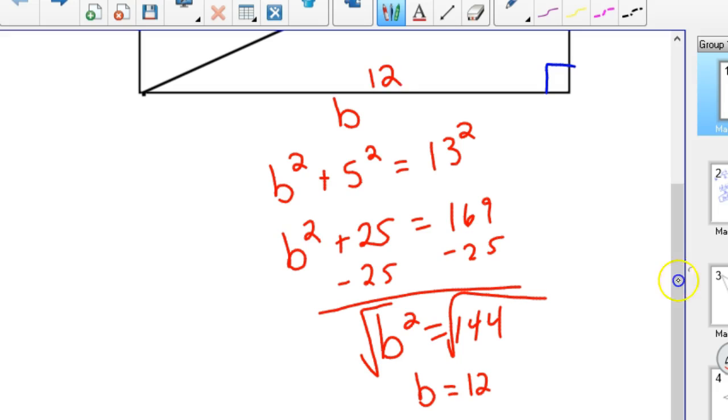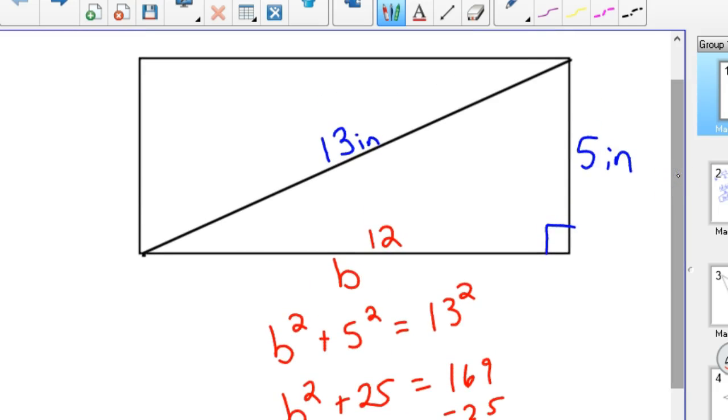So the area of that rectangle is 60, the entire thing, because 12 times 5 equals 60. So there would be 60 squares, and it would be 60 inches squared. There would be 60 one-inch squares inside that entire rectangle.